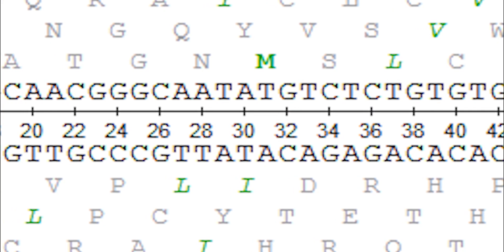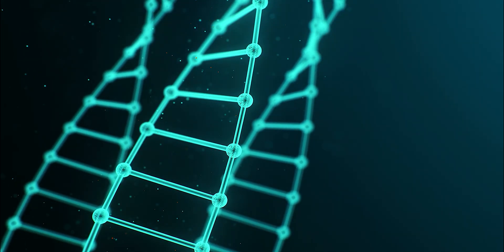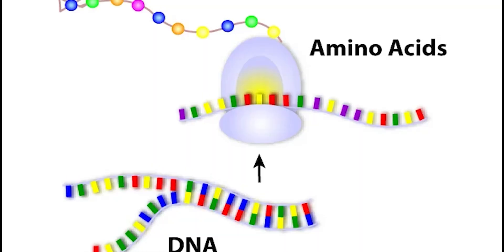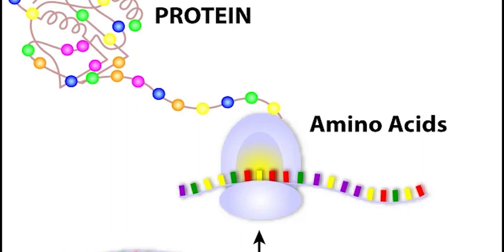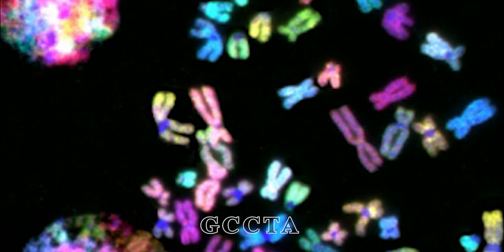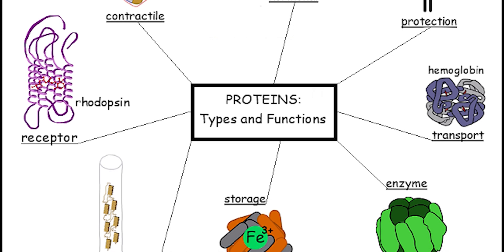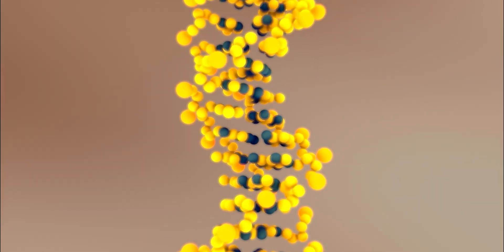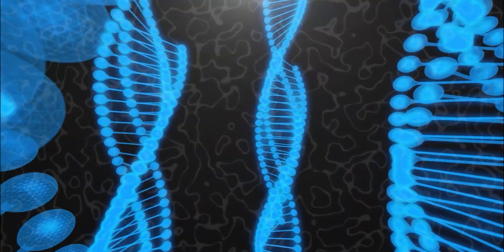Each gene is made up of a specific sequence of nucleotides, and the order of these nucleotides determines the specific instructions that the gene provides. For example, a gene that provides instructions for making a certain protein may contain the sequence A-C-A-G-T, while a different gene may contain the sequence G-C-C-T-A. The sequences of nucleotides in DNA also play a role in determining an individual's physical and behavioral traits, such as the color of your eyes and the shape of your nose.